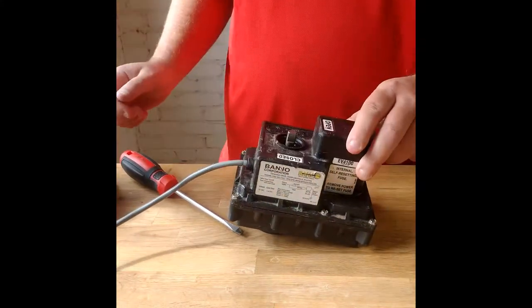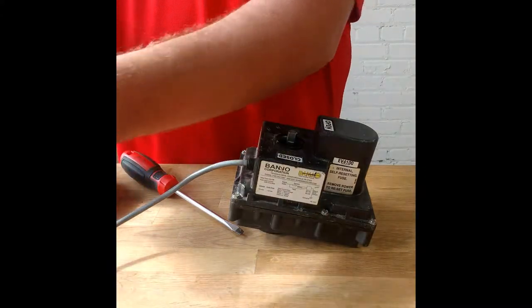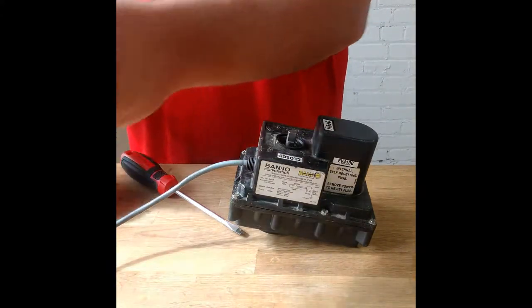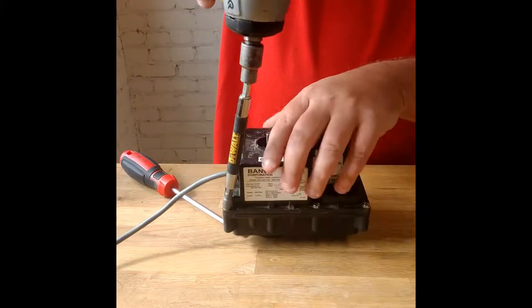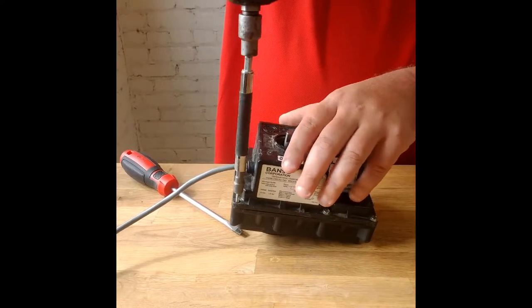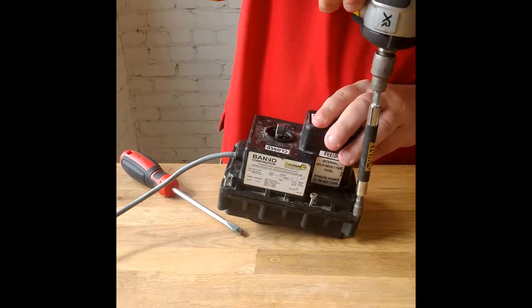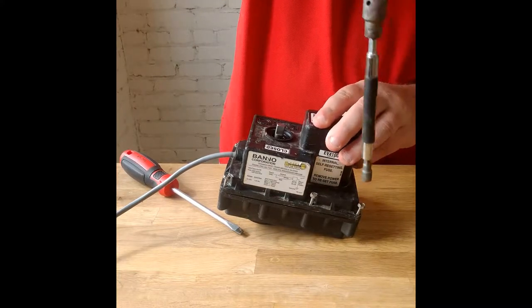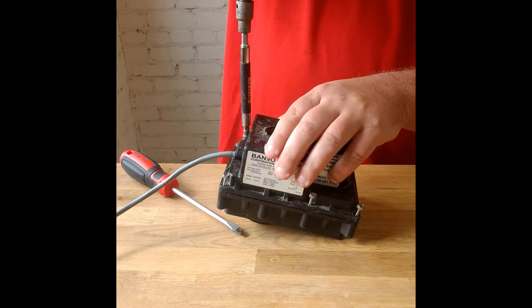So now there's six screws around the outside and you just remove those. A quarter inch head will unscrew those. That's three and a couple more.